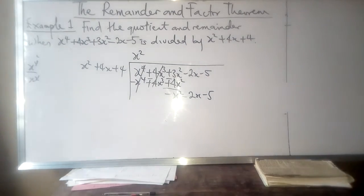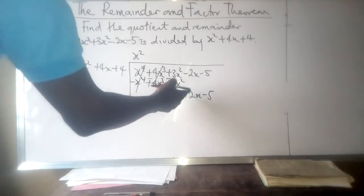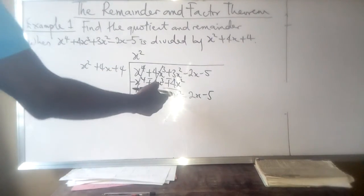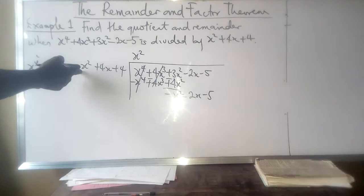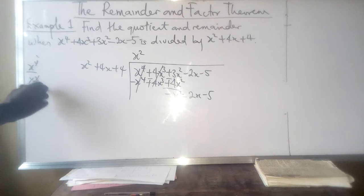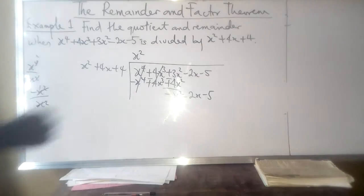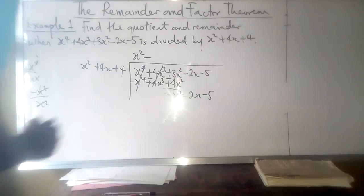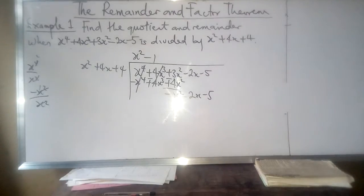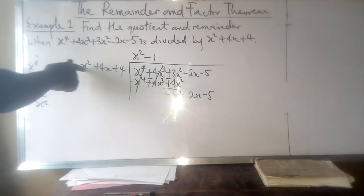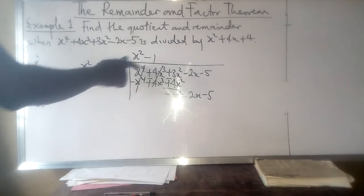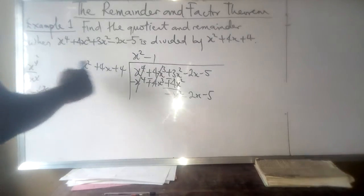Now the highest degree here is 2, so we take -x² and divide it by x². -x² over x² equals -1. Now multiply x² + 4x + 4 by -1.